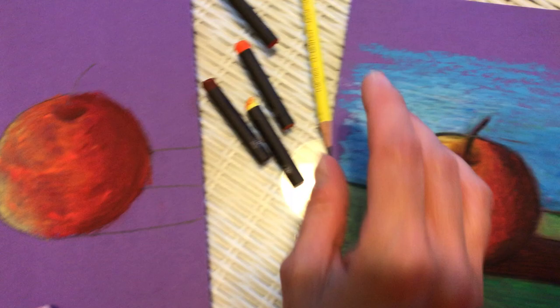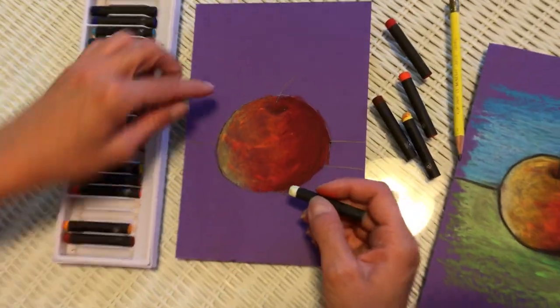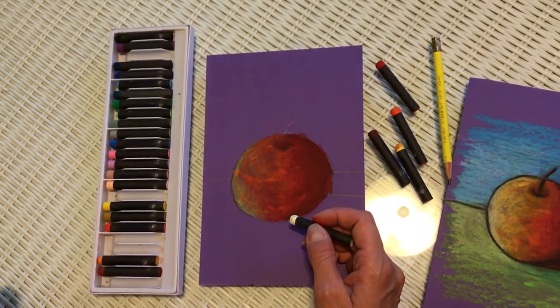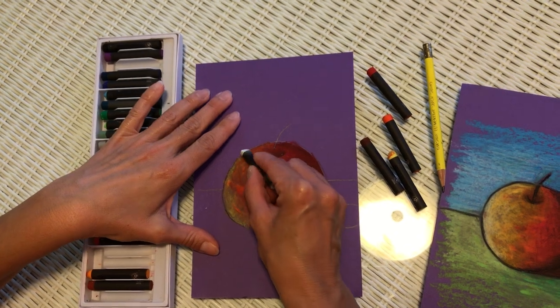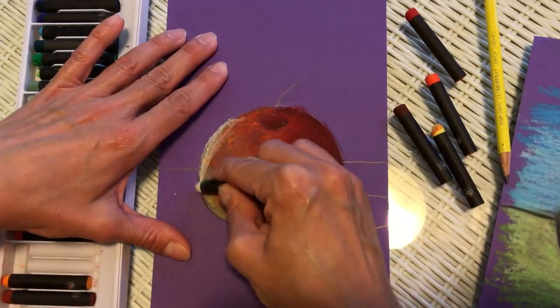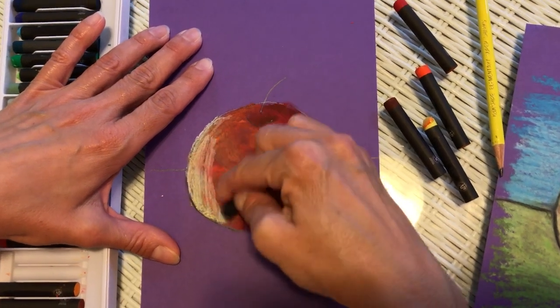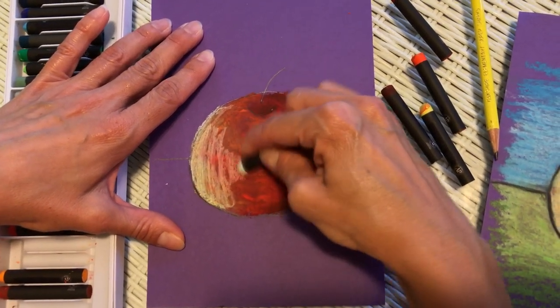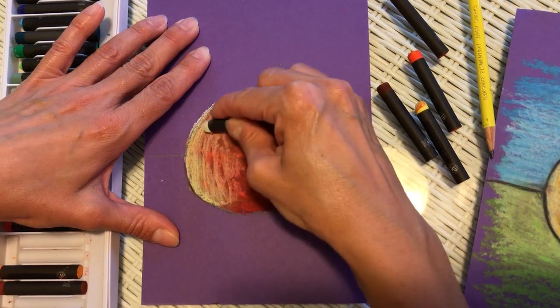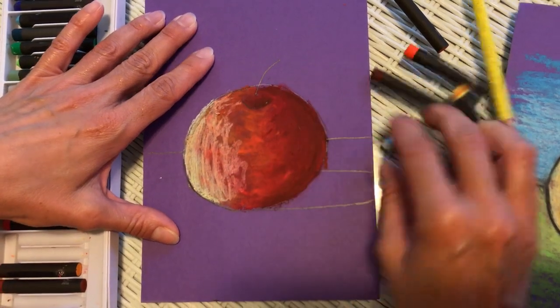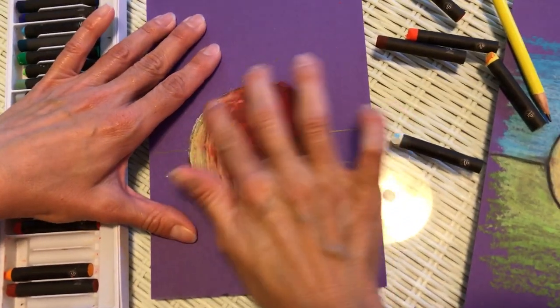Now we need to apply some highlights on this side where the light is touching the object. We're going to apply white to create the highlights. Again blending the colors.